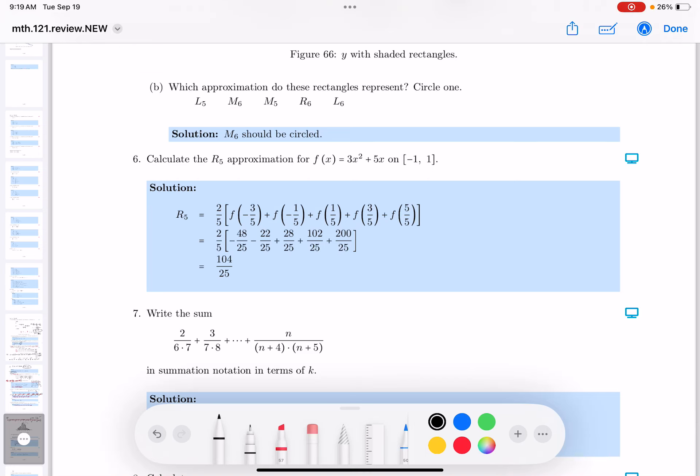Okay, for number 6, let's calculate R5. And again, you should have an idea that this is a right endpoint. And if you look at this over here, I just want to discuss that.